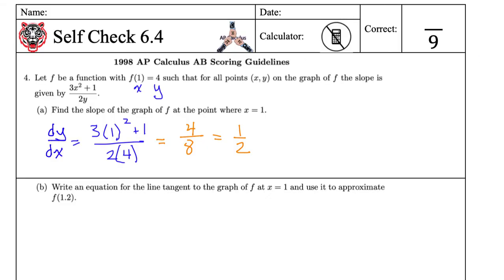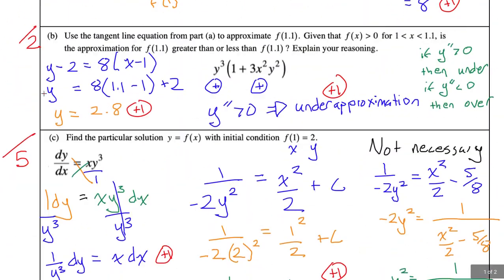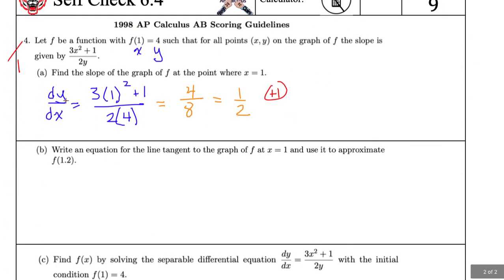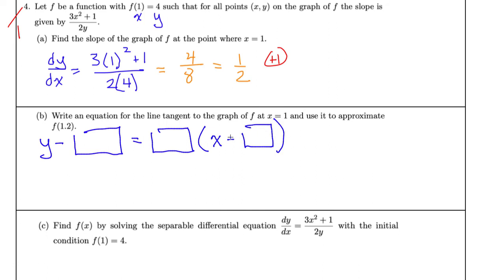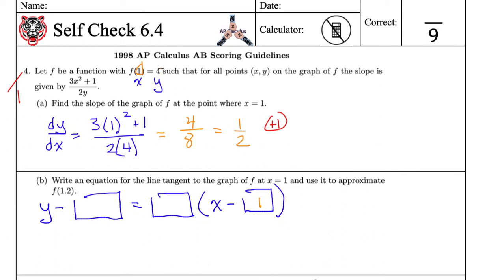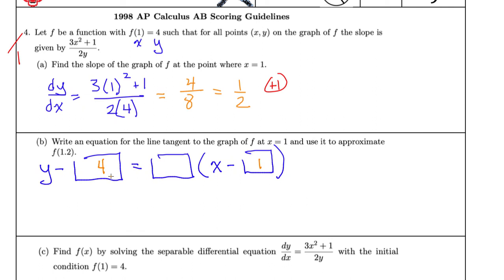Coming back over here — give yourself plus 1. Now for part B, an equation for the line tangent. We've seen this before: y minus the y-coordinate equals slope times the quantity x minus the x-coordinate. The x-coordinate is 1, the y-coordinate is 4, and the slope we already found is one half. So the equation is y minus 4 equals one half times the quantity x minus 1. That's one point for the tangent line equation.